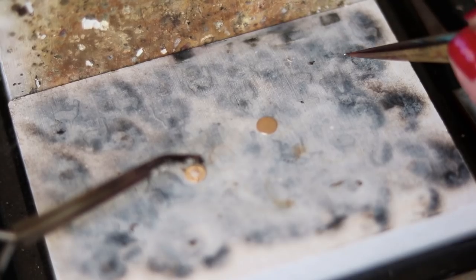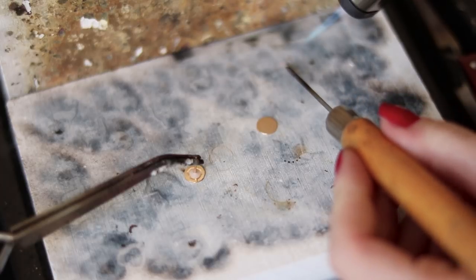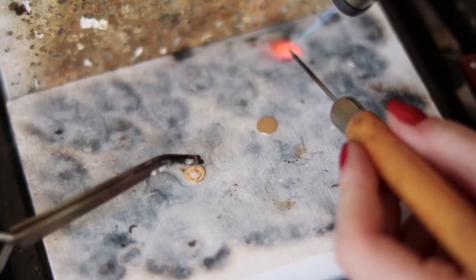I then move solder pieces to a soldering block. I melt the solder, pick it up with a solder pick and position where the earposts are touching the metal.